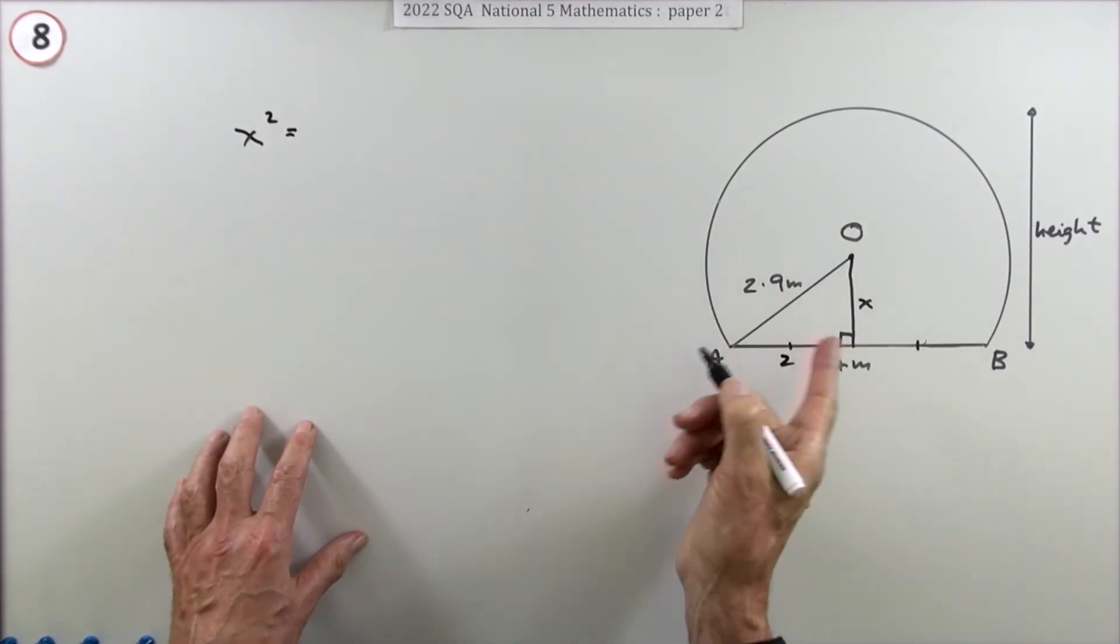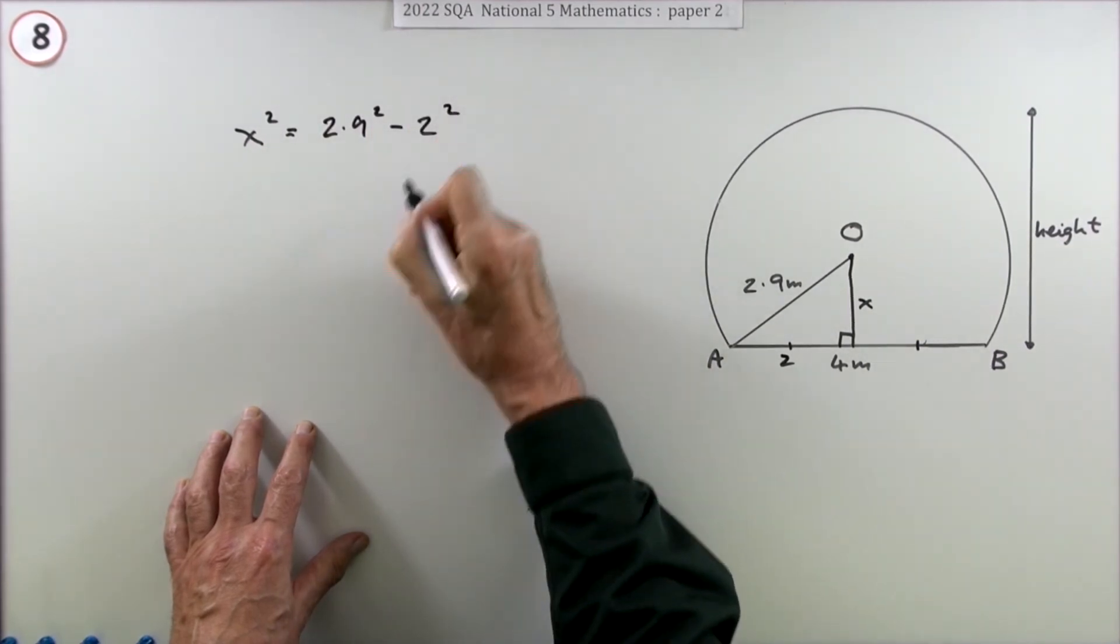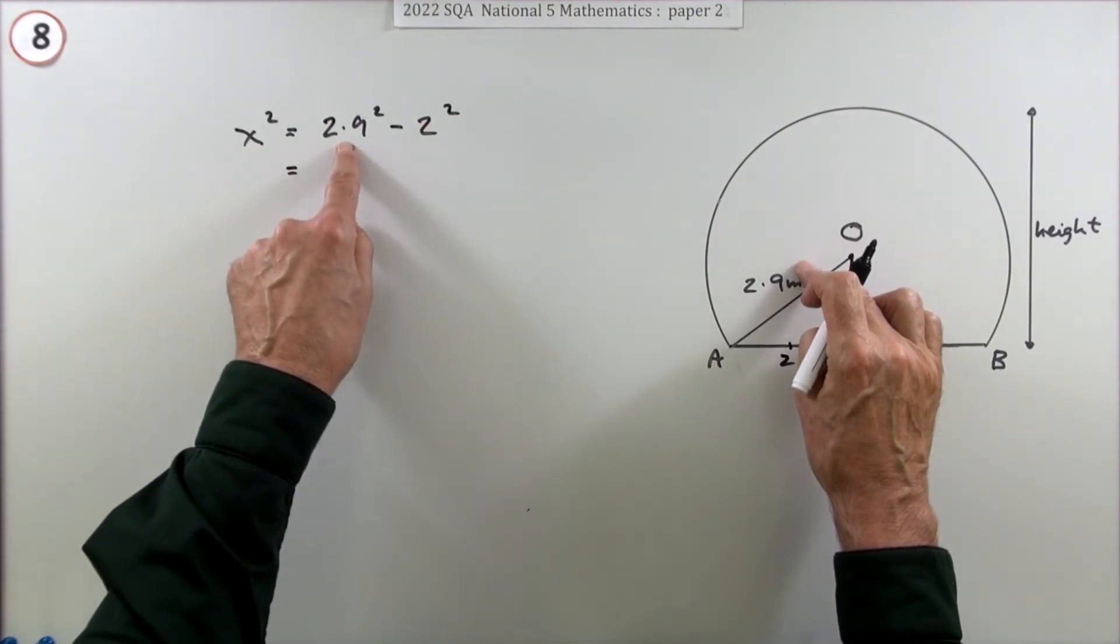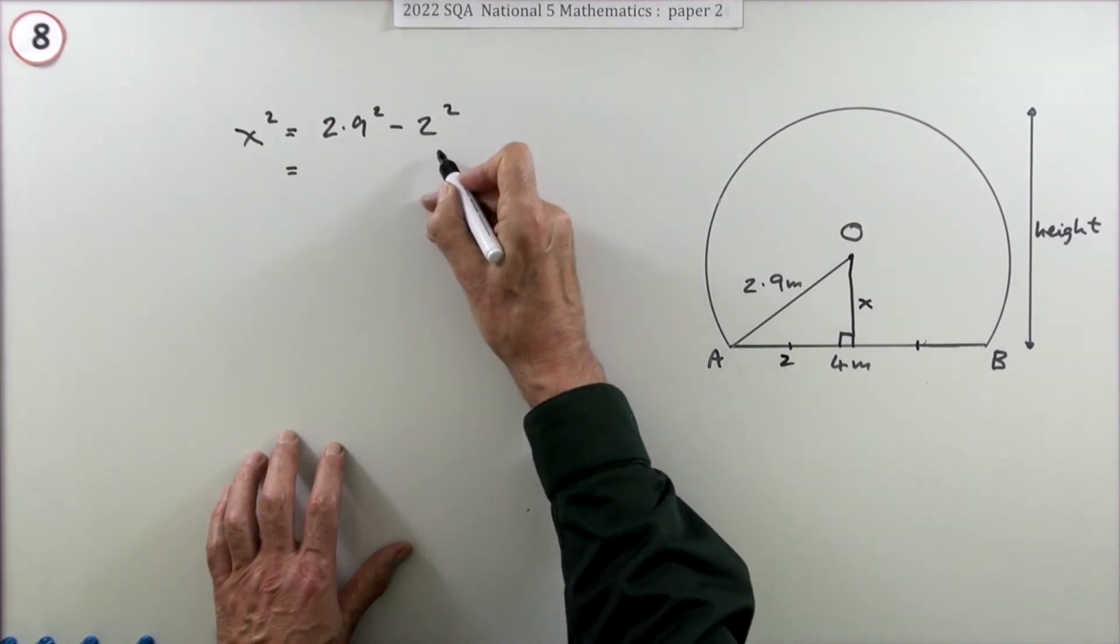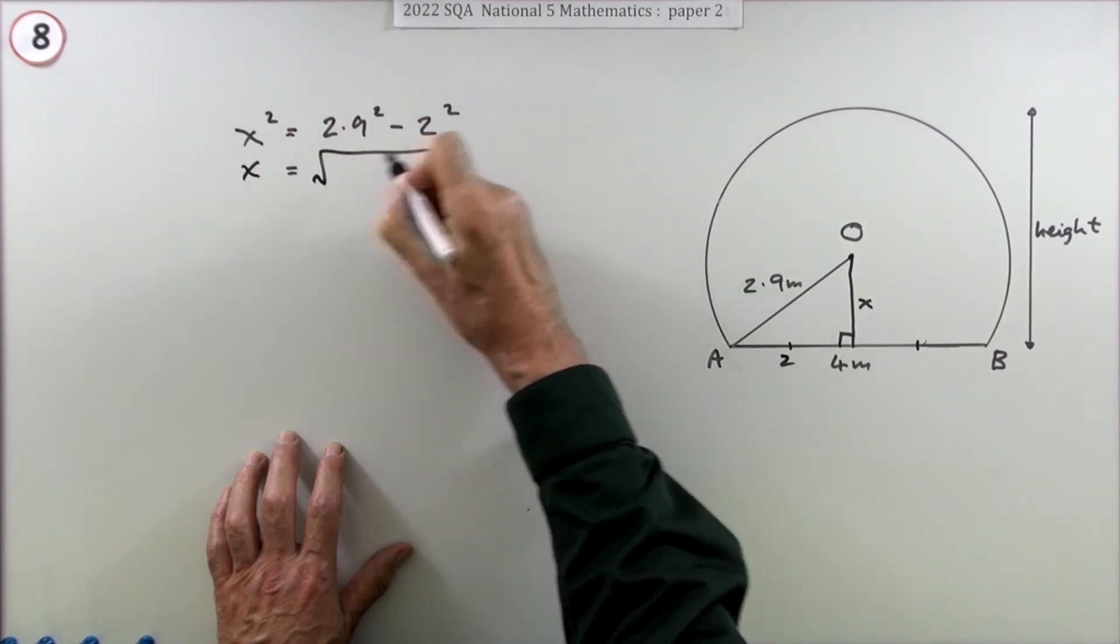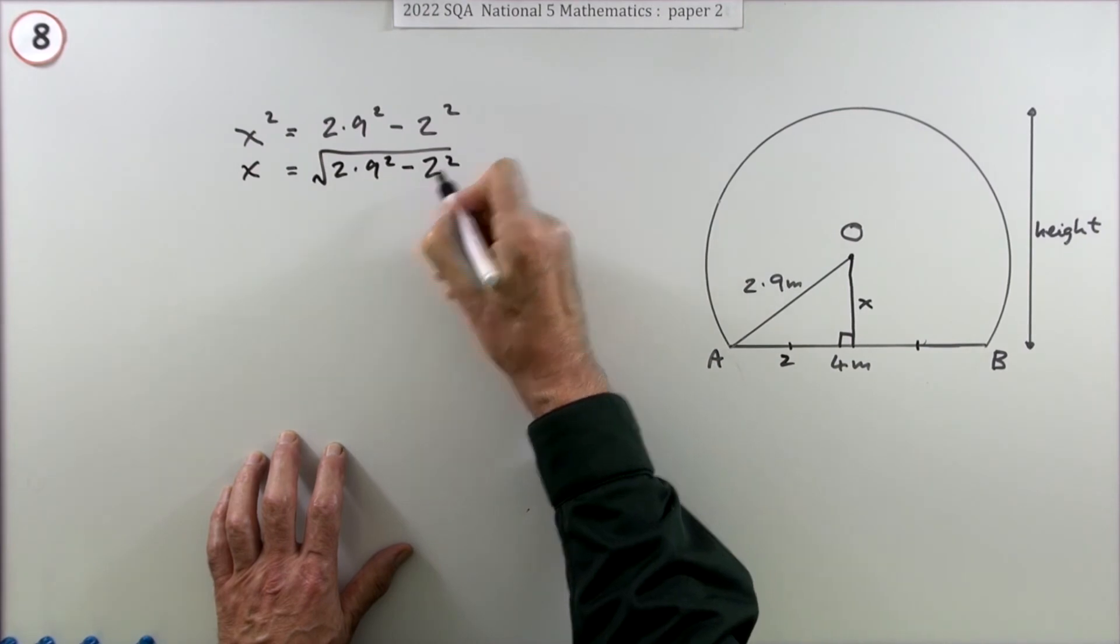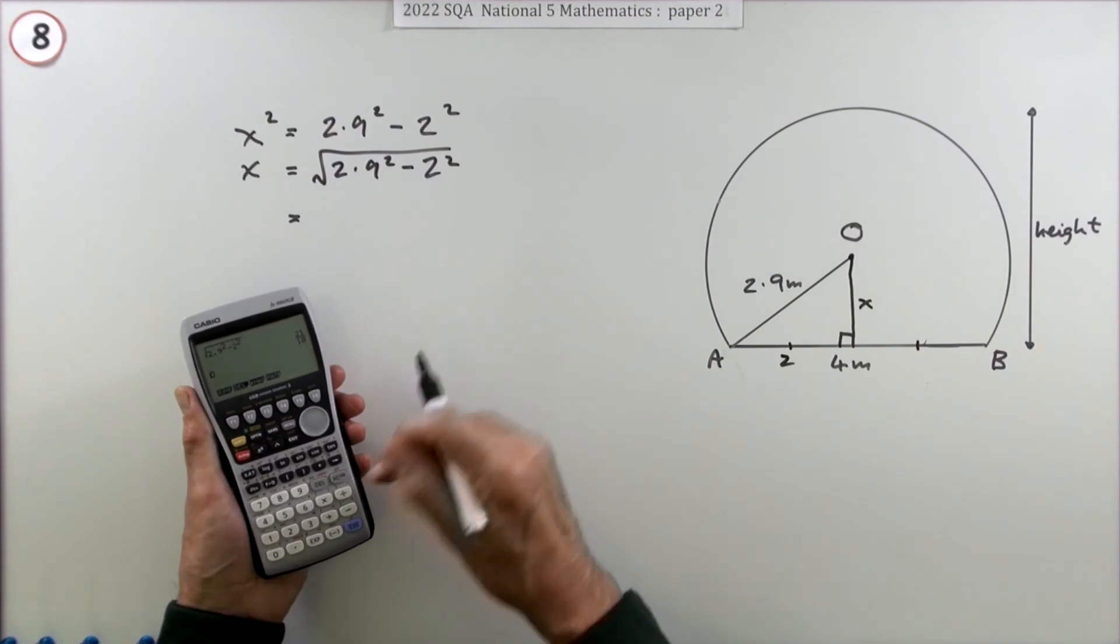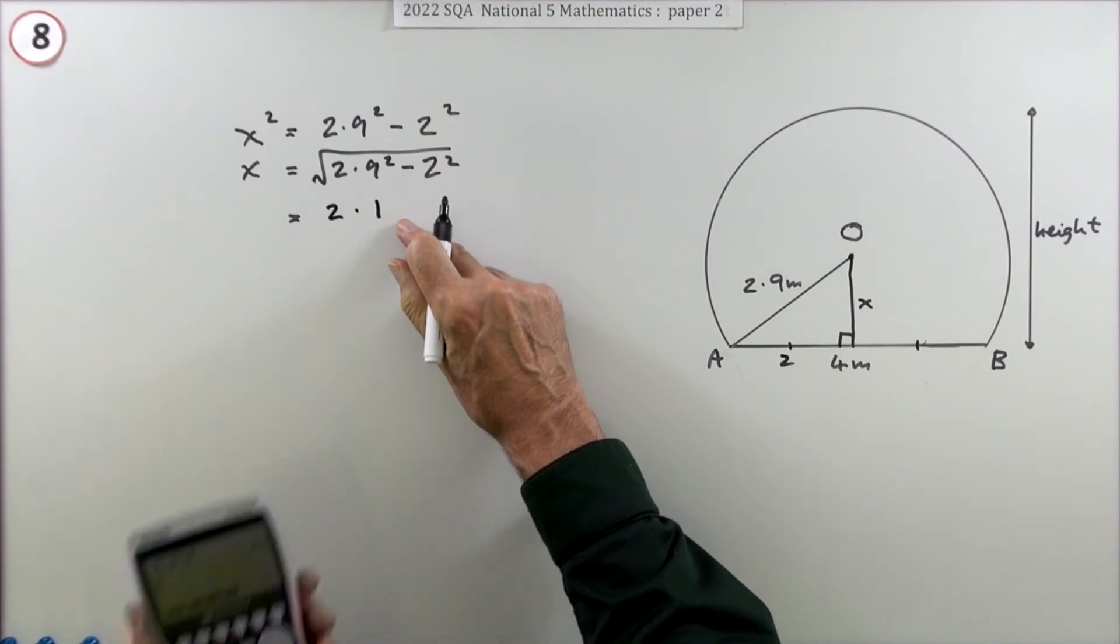I can work out x since I've got that side is 2. That will be 2.9² minus 2². x isn't the largest side—2.9 is the largest one, so everything else will be less, which is why you've got the subtract. You could work those out separately or go straight in: x will be the square root of 2.9² minus 2². Typing that in gives you the answer 2.1, which is exact and doesn't need rounding off.